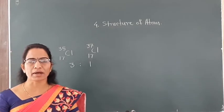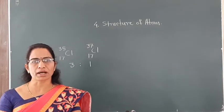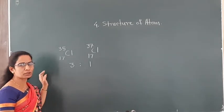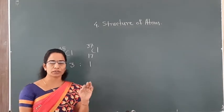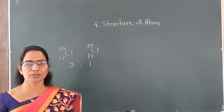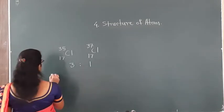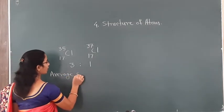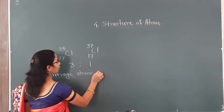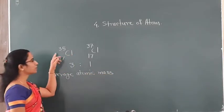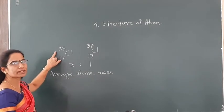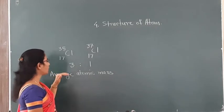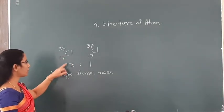So how will you determine the accurate atomic mass of these isotopes? In the first chapter, some basic concepts of chemistry, you studied how atomic mass is determined for isotopes. That atomic mass is nothing but the average atomic mass, and it depends upon the percentage abundance of the various isotopes and their mass numbers. Here we will also determine the average atomic mass of chlorine.